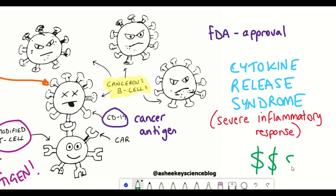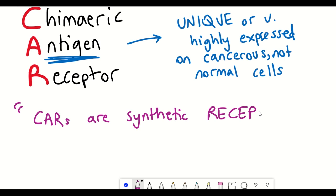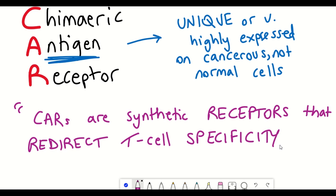To summarise CAR T-cells in one sentence: chimeric antigen receptors are synthetic receptors that redirect T-cell specificity.